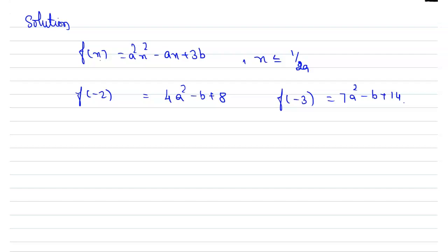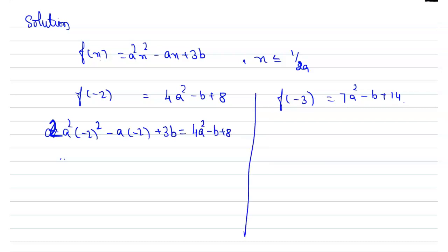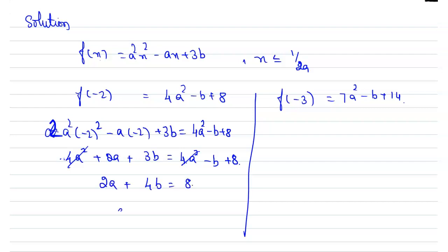Consider f(-2): substitute x = -2. So the left side gives a²(-2)² - a(-2) + 3b = 4a² - b + 8, which implies 4a² + 2a + 3b = 4a² - b + 8. Cancelling 4a² and bringing -b to the left gives 2a + 4b = 8, so a + 2b = 4. This is equation one.